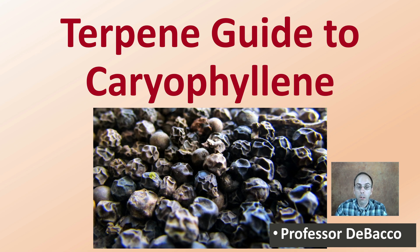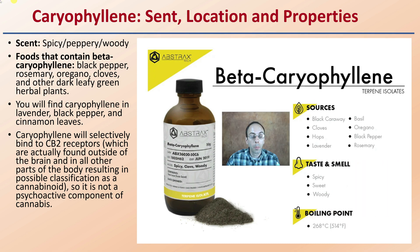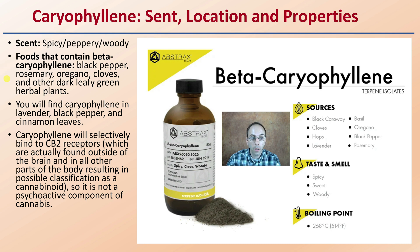What we see in the image here is some black pepper, because that's kind of what represents this particular terpene. It has a spicy, peppery, woody kind of scent to it. Foods that contain it include black pepper, rosemary, oregano, cloves, and other dark leafy green herbal plants. You'll also find karyophyllene in lavender, black pepper, and cinnamon leaves.